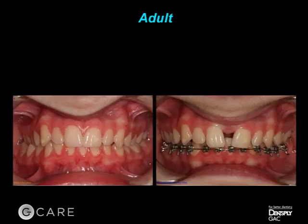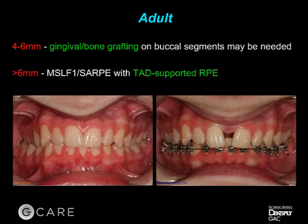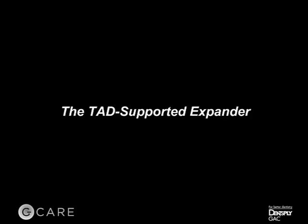For an adult, anything less than 4 to 6 millimeters — we still cannot predictably expand an adult patient. The research I just talked about might show when it might be possible, but the predictability is still not known. Anything more than 6 millimeters is still within the surgical realm, either with a multi-segment LeFort or a SARP if the sutures are totally fused. To end, I'd like to talk about the TAD-supported expander and how this has affected the way I practice and how you can start incorporating it into your office.